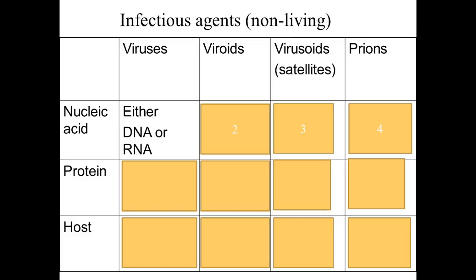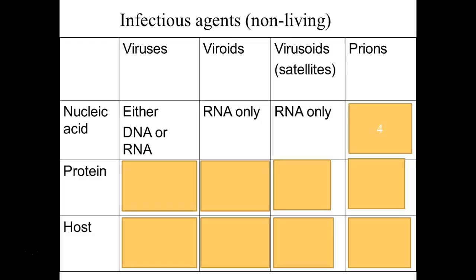Viroids are just RNA — that's all they are. And when we talk about what hosts they infect, you'll understand why you've probably never heard of them. Virusoids, or satellites, are similar to viroids in that they too are just RNA. Prions, or infectious proteins, are protein — so do they contain any nucleic acid? No. They're just protein. Viruses are DNA or RNA surrounded by a protein coat — their shell, their protective layer.